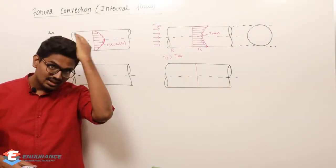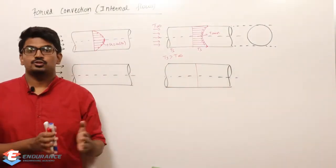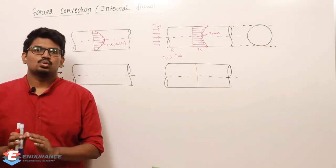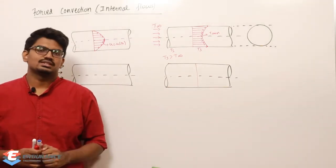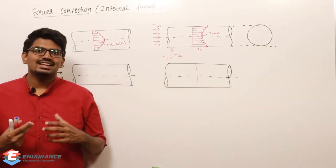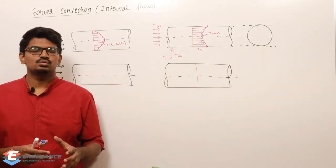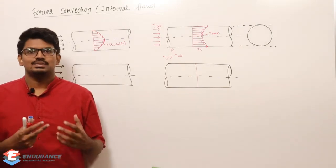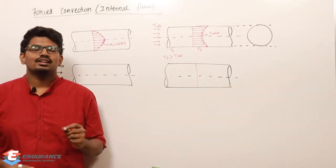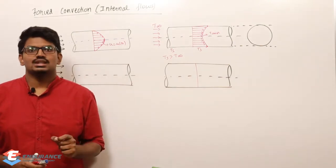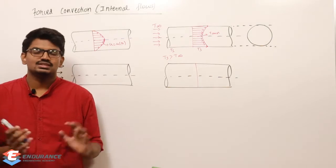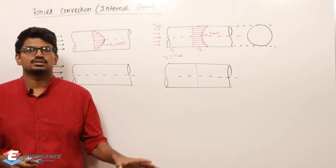Let us start the second half of forced convection. We completed the first half, which was flow over flat plates. Now, when we consider flow inside a tube or duct, there is an internal flow. There are a few background concepts which need to be covered before starting to discuss Nusselt number and related things - that is the actual concept of convection.